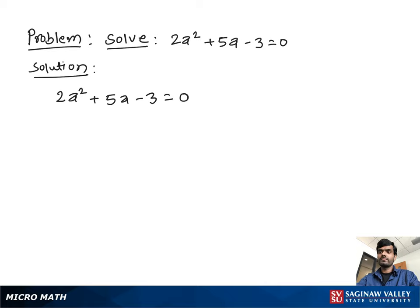To find the factor, we multiply the coefficient of a square, 2, with the constant negative 3. That gives us negative 6, and the factor of negative 6 is negative 1, 6, negative 2 and 3.